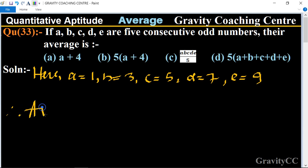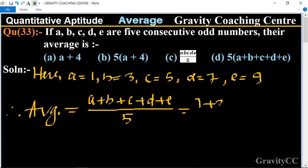And therefore their average equal to a plus b plus c plus d plus e upon 5. So their values is 1 plus 3 plus 5 plus 7 plus 9 upon 5.